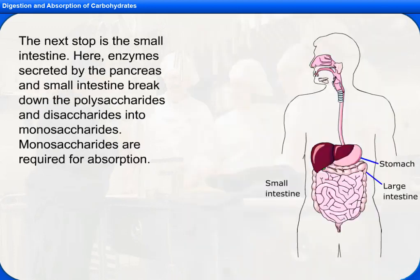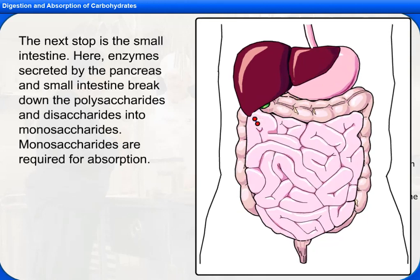The next stop is the small intestine. Here, enzymes secreted by the pancreas and small intestine break down the polysaccharides and disaccharides into monosaccharides. Monosaccharides are required for absorption.